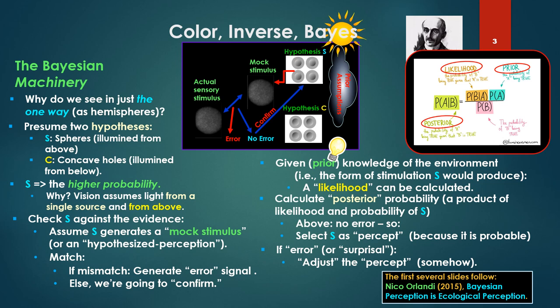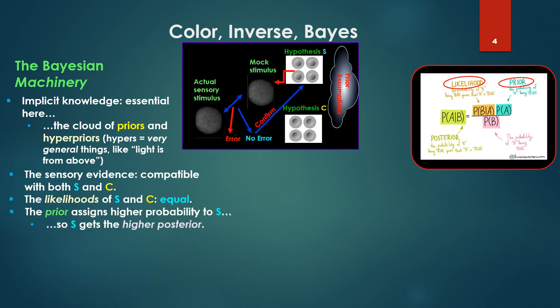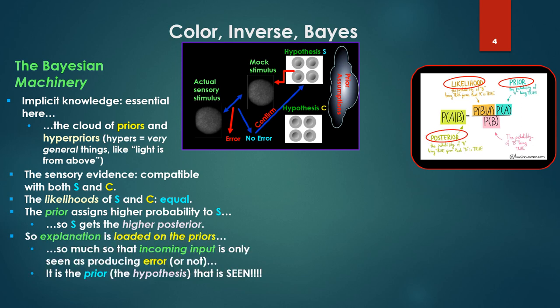We'll confirm that hypothesis. If error, however, or what's called surprisal, we didn't expect that, doesn't match the hypothesis, we're going to have to adjust the percept somehow. So implicit knowledge is essential here. That cloud of priors and hyperpriors, hypers being very general things like the light from above, the sensory evidence is compatible with both hypothesis S and C, and the likelihoods of S and C are both equal. So the prior assigns prior probability to S, then light from above, so S gets the higher posterior.